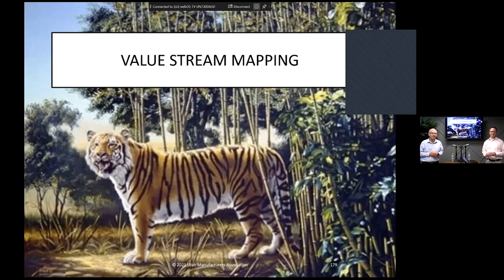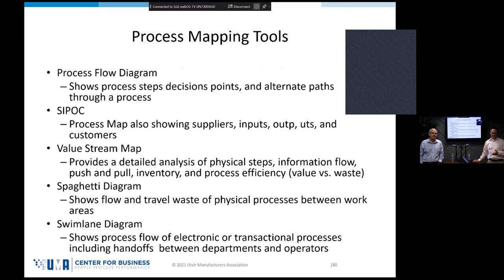When we go to map the process, sometimes we think we're looking for one thing, but the real problem is hidden in plain sight. I have tons of examples where I mapped the process and the problem was right there the whole time — we just didn't see it because we get so used to seeing things the way they are and not thinking about how they could be different. What waste are we living with on a daily basis? We're going to learn about different process mapping tools.